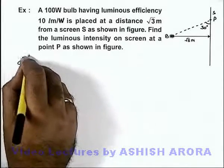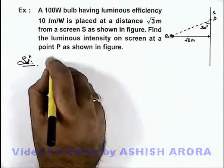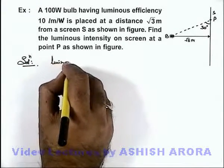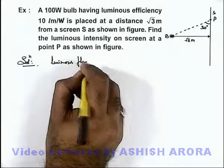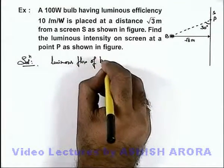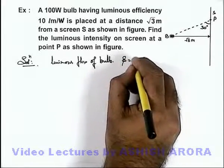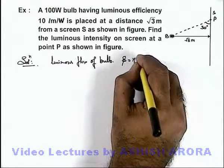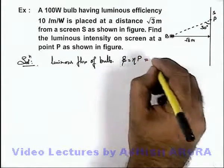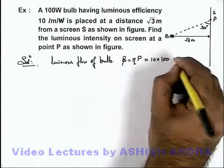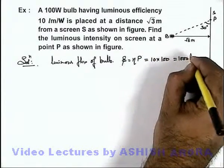Now in this situation, the very first thing we can find out is the luminous flux of the bulb. This can be given as φ equals luminous efficiency multiplied by the radiant flux, so here it will be 10 multiplied by 100, that is 1000 lumens.